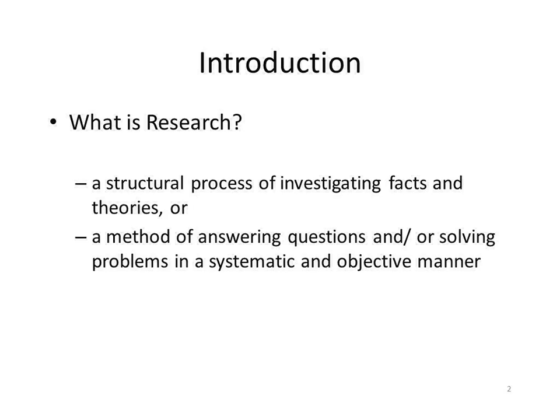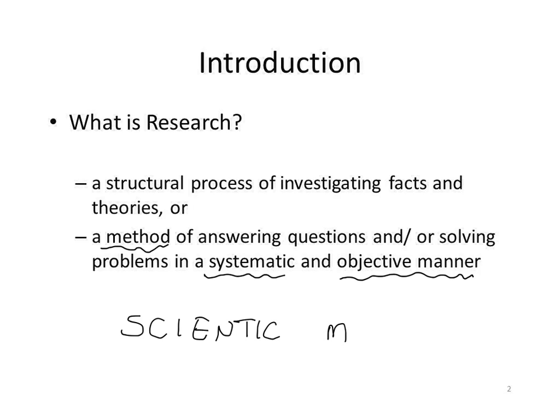Some of the key terms you really need to catch here: systematic means that we have a clear A, B, C, D path. Objective means that if we were to replicate it, we'd get the same outcome. And the whole method brings us into the key term we're going to work on this semester, which is the idea of applying the scientific method to whatever your research question is.